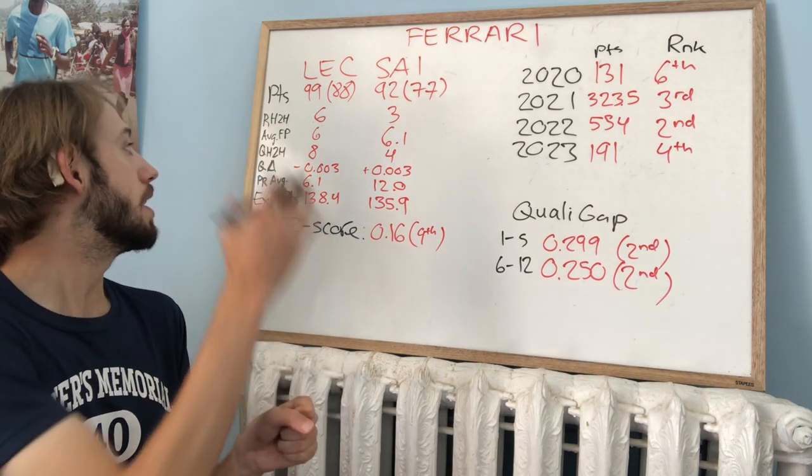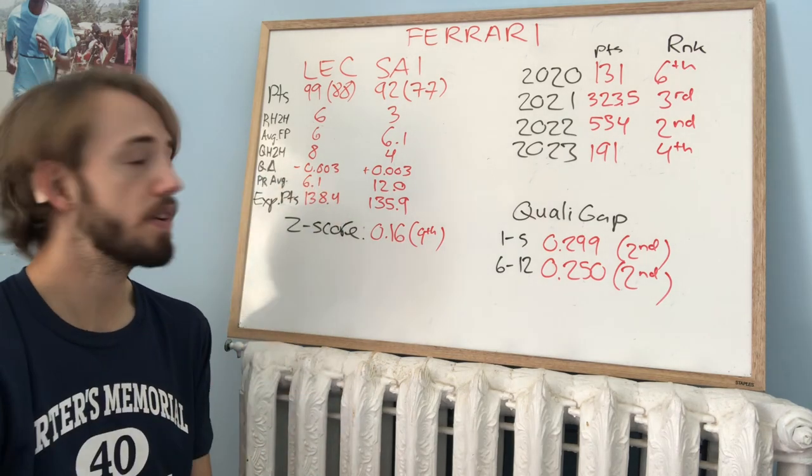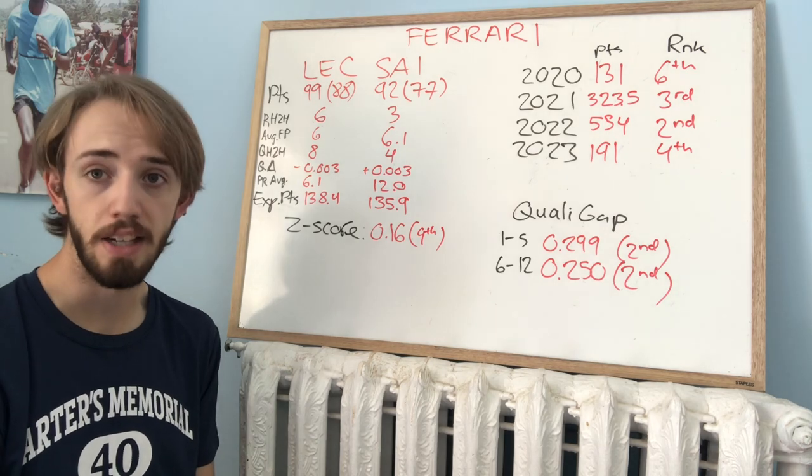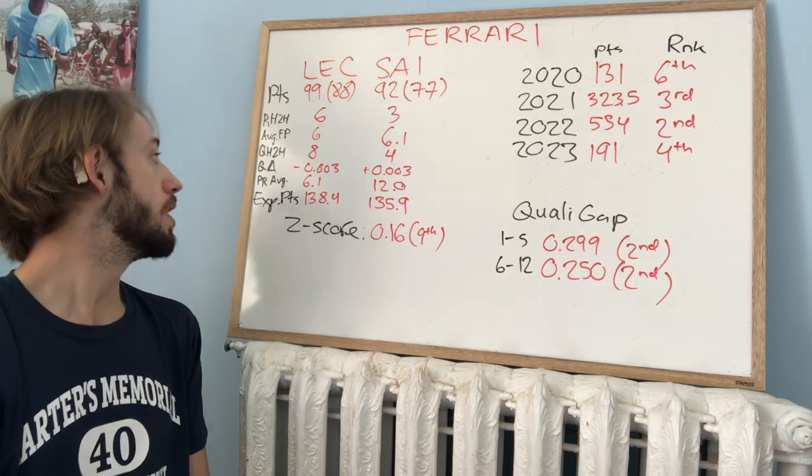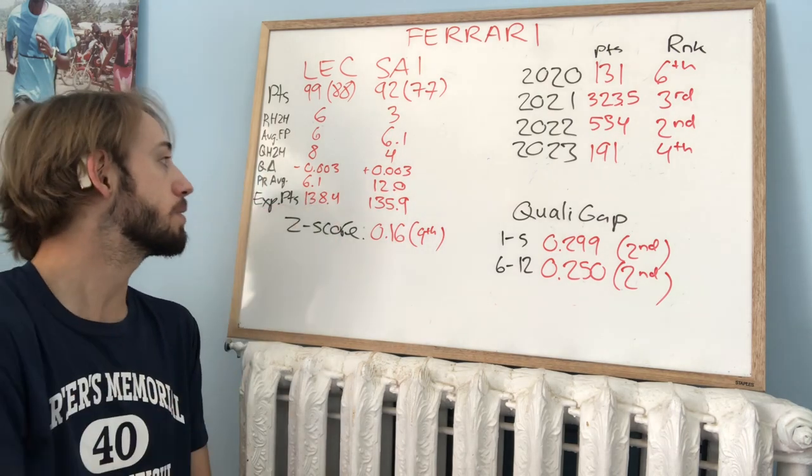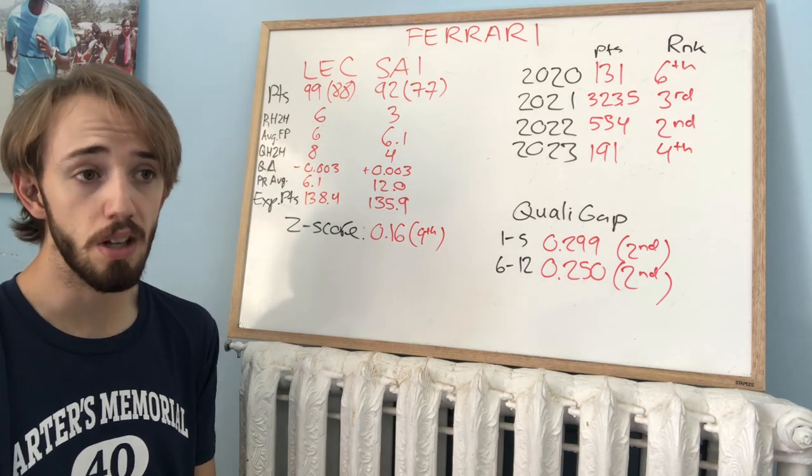Qualifying head-to-head in the battle, 8-4 in favor of Leclerc. So definitely more often than not, Leclerc's the one who has the advantage on Saturday. But when we look at the qualifying delta, it's extremely close. 0.003 in favor of Leclerc. So extremely close.